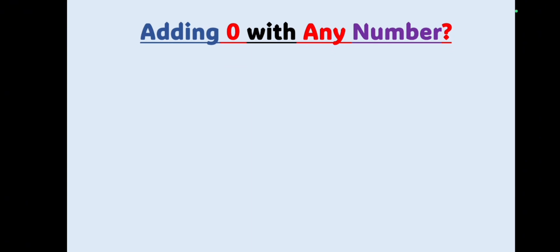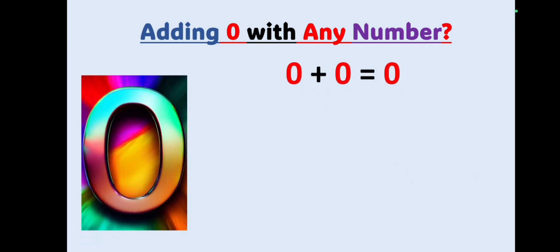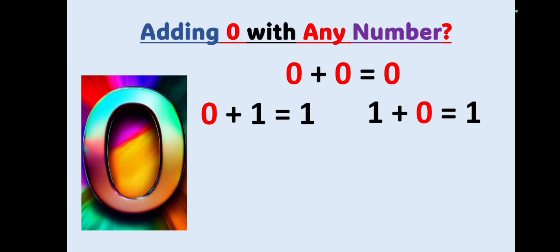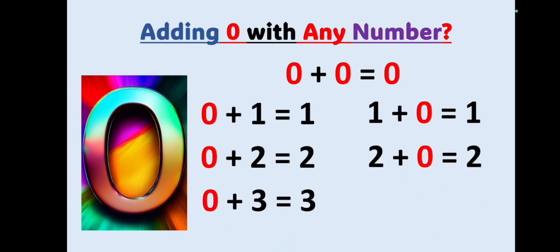Before we proceed, let's remember the golden rule of adding zero with any number. We've seen this many times in previous classes. The golden rule: adding zero plus any number gives you the same number. For example, zero plus zero equals zero, zero plus one equals one, one plus zero is also one. Similarly, zero plus two equals two, two plus zero is also two. Zero plus three equals three, and three plus zero is also three. So whether zero comes first or second, adding zero to any number gives you the same number.